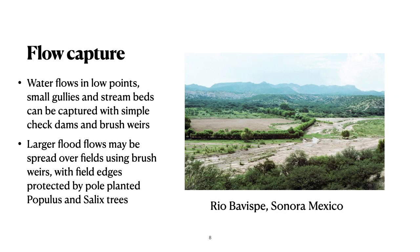Even more interesting challenges arise in areas with very high water flows, here on the Rio Bovispe in Sonora, Mexico. A very small stream in the summer, but it can be huge during floods. The traditional practice here has been to line the waterway with pole-planted check dams and weirs. The large flood flows that occur are spread over the fields using brush weirs, and the field edges are protected with pole-planted Populous and Salix trees, really making it a most impenetrable barrier.